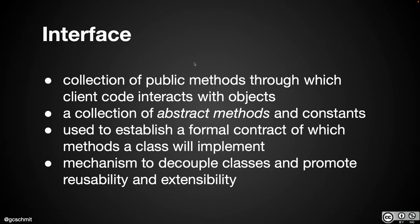A Java interface has some similarities and some differences to regular classes. You can think of a Java interface as a set of public methods — every method is public. And every method is abstract, meaning an interface has no implementation for any method in it. It simply declares those methods. Think of an interface as like a promise that you have to fulfill. So when a class says it implements an interface, it's promising to actually implement each and every method in that interface.